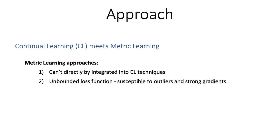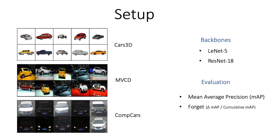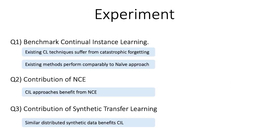Metric learning approaches can't directly be integrated with continual learning. Additionally, they suffer from an unbounded loss function. In our approach, we adapt and benchmark, incorporate normalized cross-entropy, and apply synthetic transfer learning. We evaluate the forget ratio on three datasets and two backbone architectures. Our experiments show that existing continual learning approaches suffer from catastrophic forgetting and do not outperform naive approaches. Normalized cross-entropy and synthetic transfer help in forgetting less. Have a look at our paper for more details. Thank you.